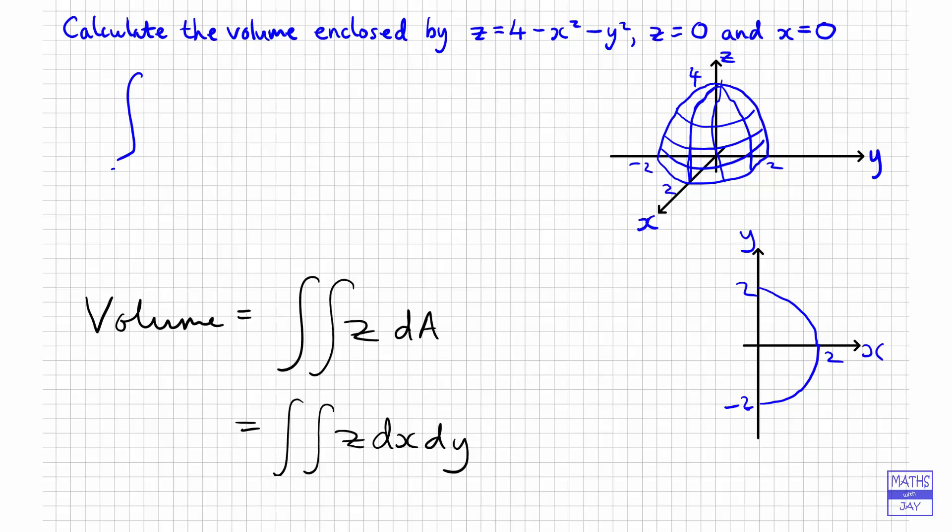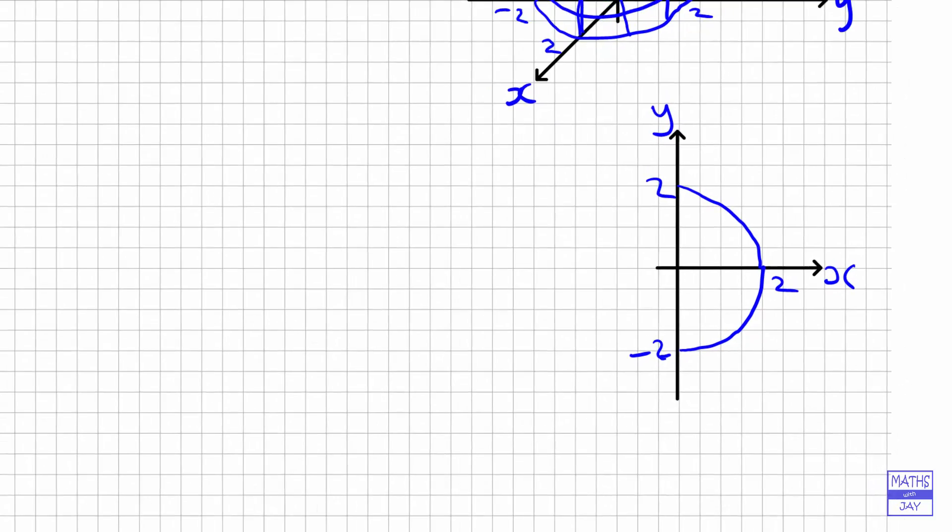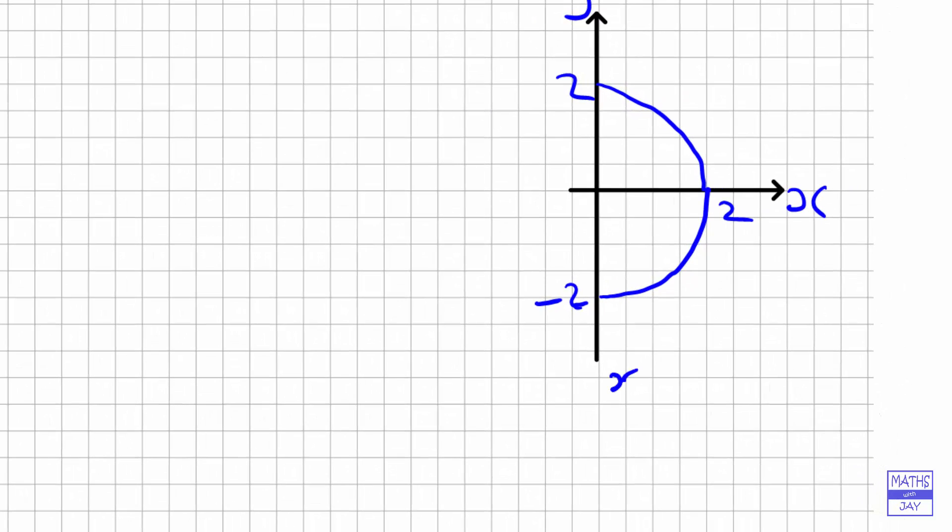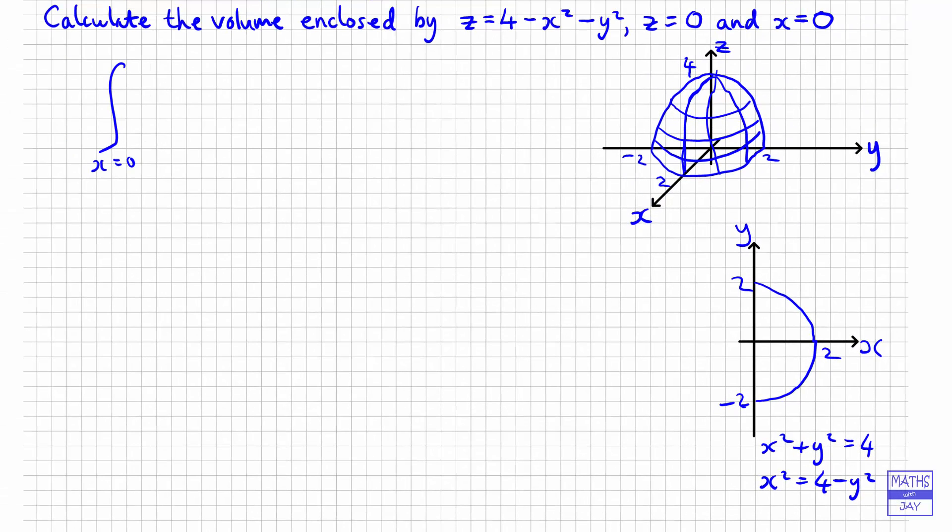So we've got x equals 0 up to... Well, let's just write this down. And we've got x squared plus y squared equals 2 squared equals 4. So x squared is 4 minus y squared. So x is going to be the square root of 4 minus y squared. And x is positive, so it will be the positive square root.